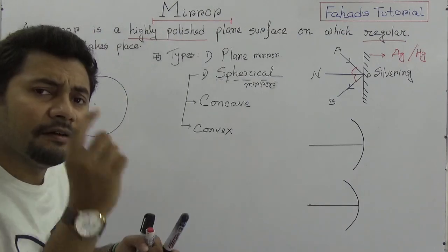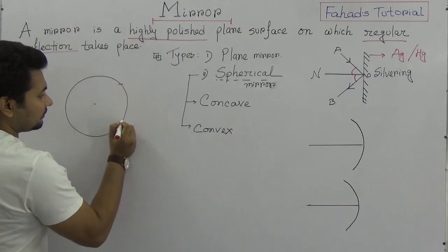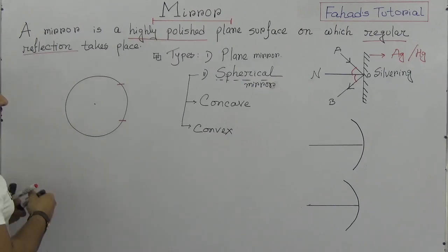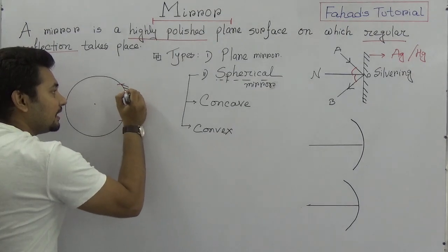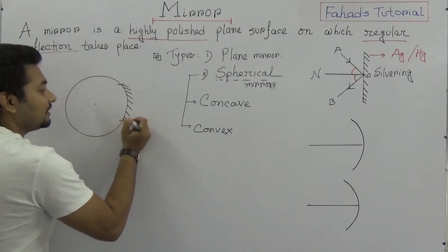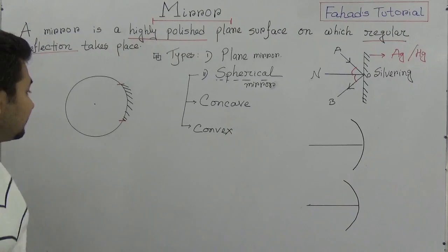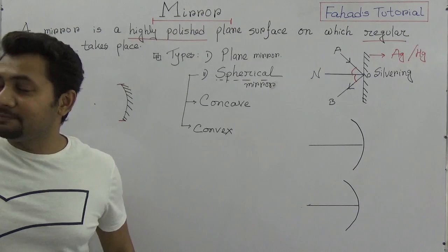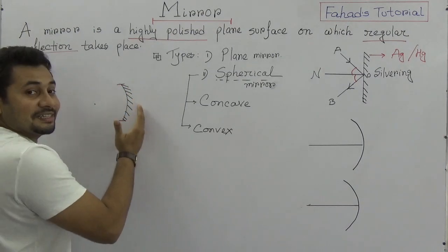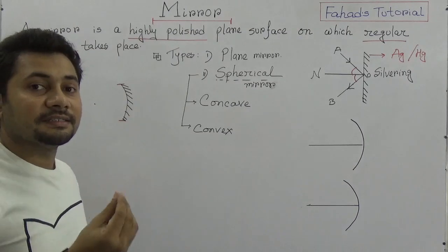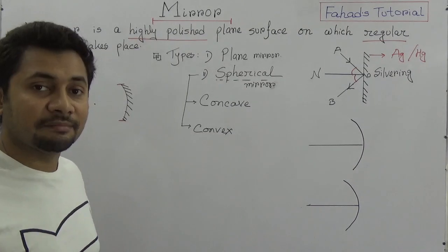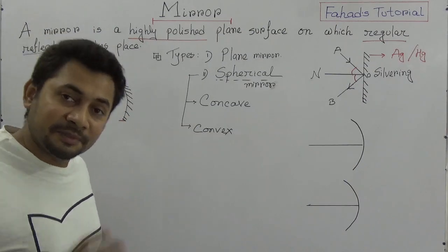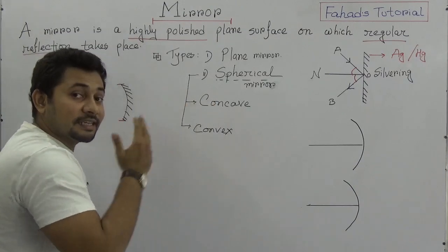If I take a small part of the sphere and silver the other side, then vanish the rest of the sphere, this small part where the silvering is done will become a mirror — a spherical mirror. It will become a concave mirror. We need to know what the convex and concave parts are.